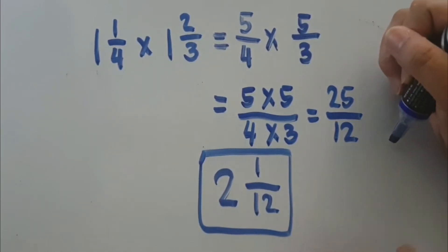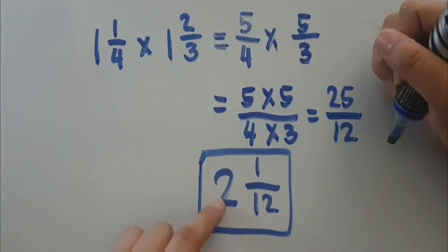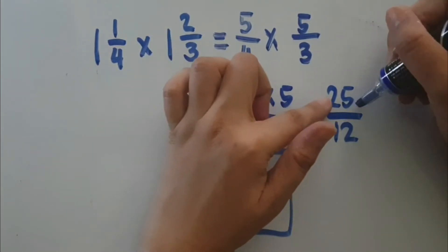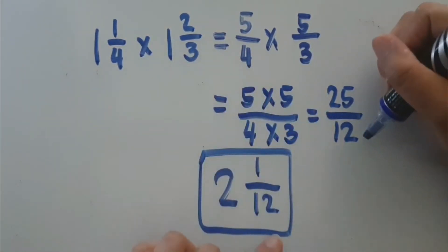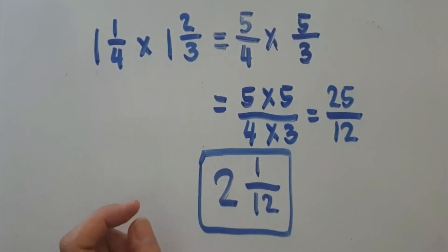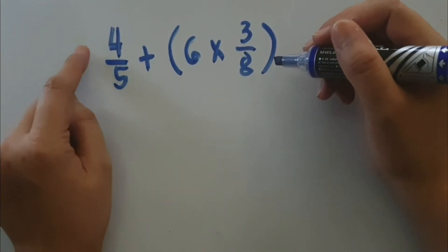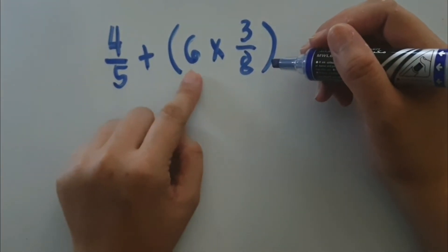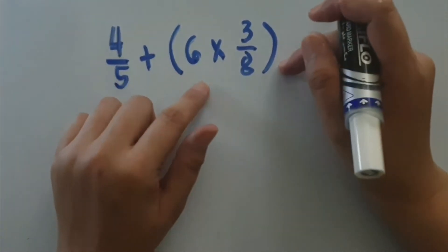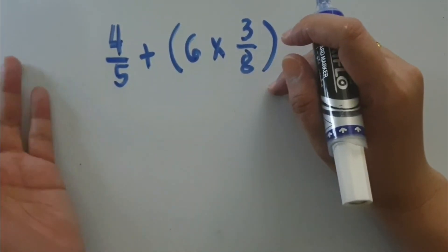How will you know if you did it correctly? Let us check. 12 times 2 is 24, plus 1 is 25. Just copy the same denominator. Now, let us evaluate this expression. We have four-fifths plus the quantity of 6 times three-eighths. We have a grouping symbol here, so we have to perform the operation inside the grouping symbol first before we do the other operations.